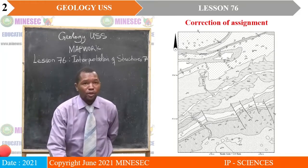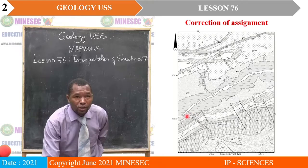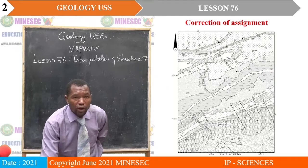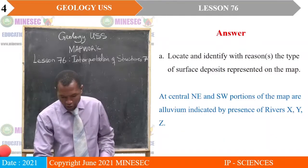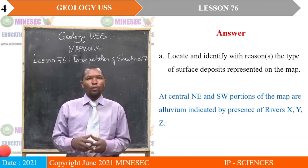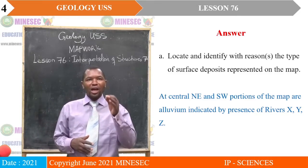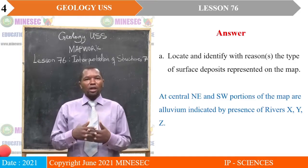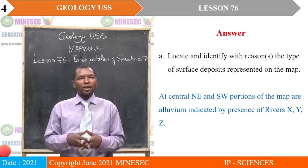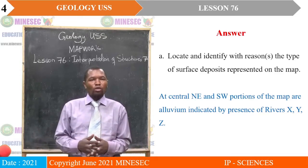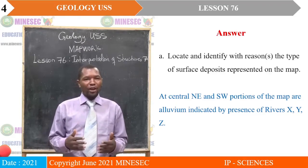Looking back at our map, you will realize that somewhere here you have a river with a name, and this is also a river course. Therefore, it is easy to identify which type of surface deposits are present. The first question requires us to locate and identify with reasons the type of surface deposits. At the center, northeast, and southwest portions of the map are alluviums, indicated by the presence of rivers X, Y, and Z. So we have three rivers in the area, and automatically the deposits are alluviums — river deposits formed by river action.